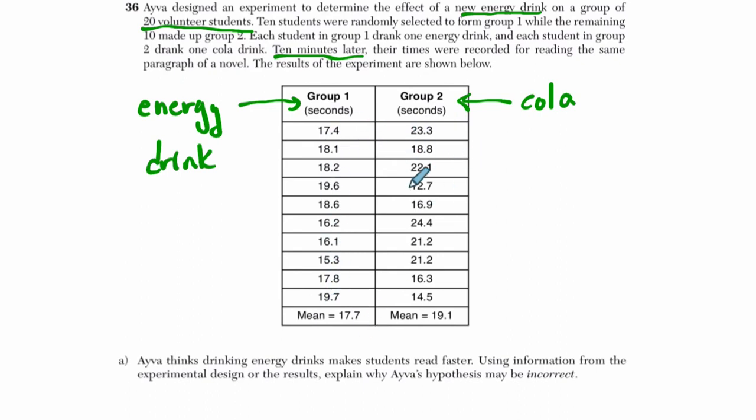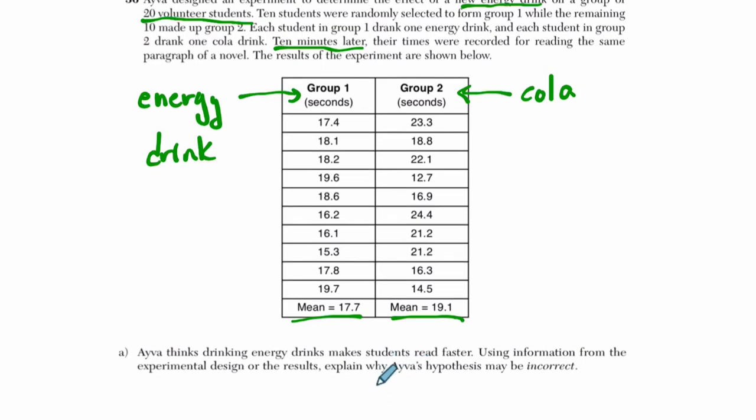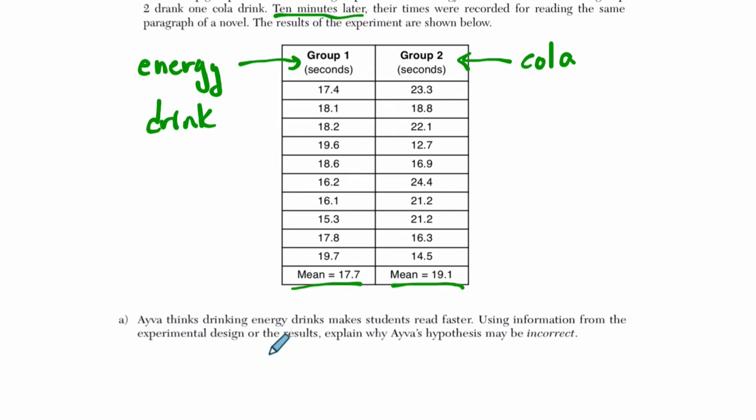Their times are recorded for reading the same paragraph of a novel. The results of the experiment are shown below. So these are their times, how long it took them to read the novel after 10 minutes, and these are the mean results down there. So Ava thinks drinking energy drinks makes students read faster because the time is lower here. Lower time means it took less time to read, so they're reading faster.